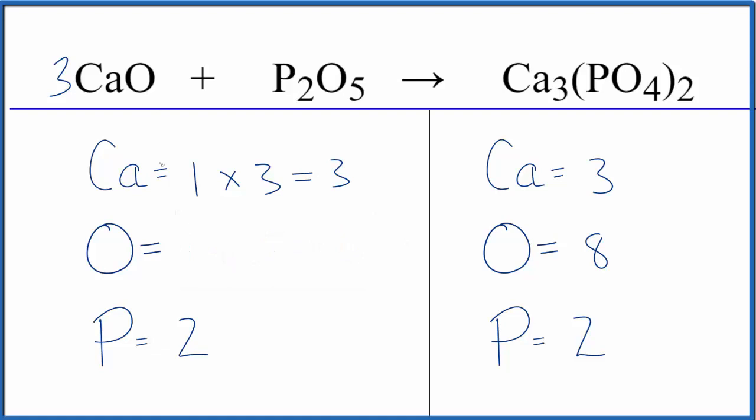We have one times three plus we have the five here. Three plus five, that gives us eight. We're done. This equation is balanced.